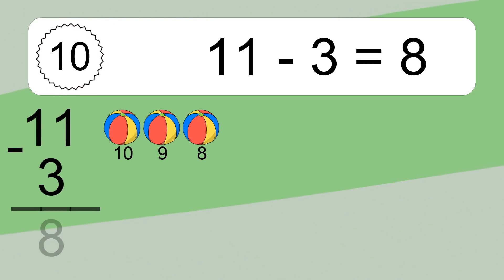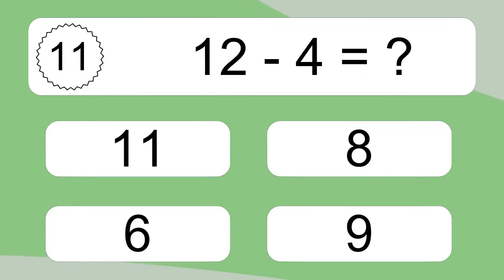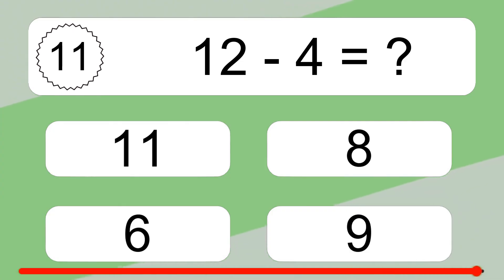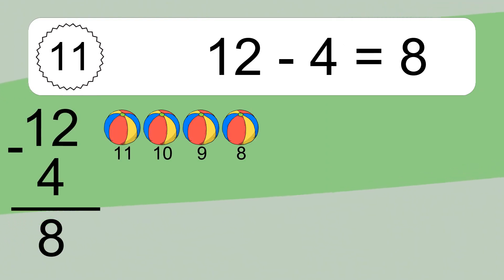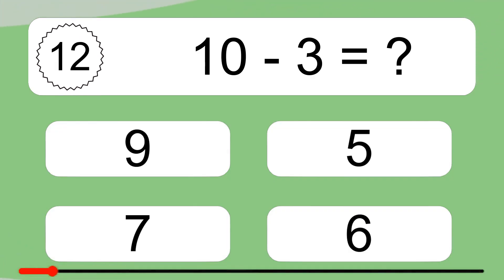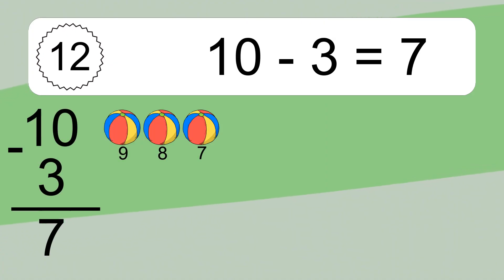11 minus 3 equals what? 11 minus 3 equals 8. Let's count it. 11, 10, 9, 8. 10 minus 3 equals what? 10 minus 3 equals 7.